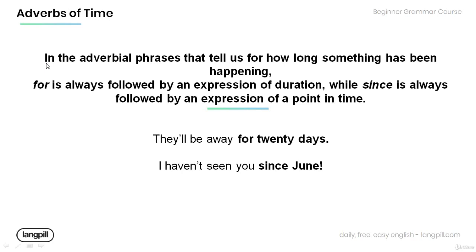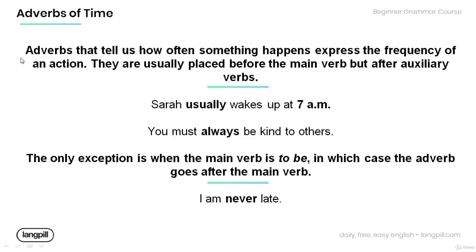In adverbial phrases that tell us for how long something has been happening, 'for' is always followed by an expression of duration, while 'since' is always followed by an expression of a point in time. Have a look at the examples: 'They'll be away for 20 days' — 'for' is followed by an expression of duration, 20 days. And in the sentence 'I haven't seen you since June,' 'since' is followed by a point in time, which is June.